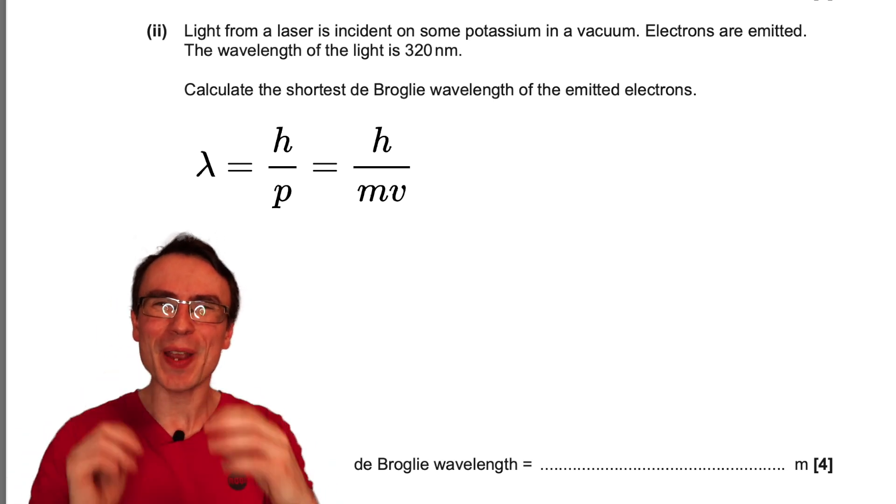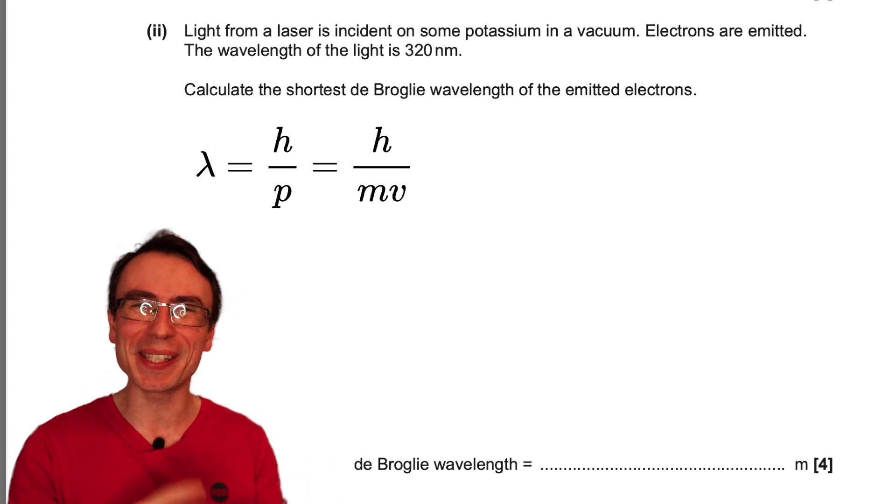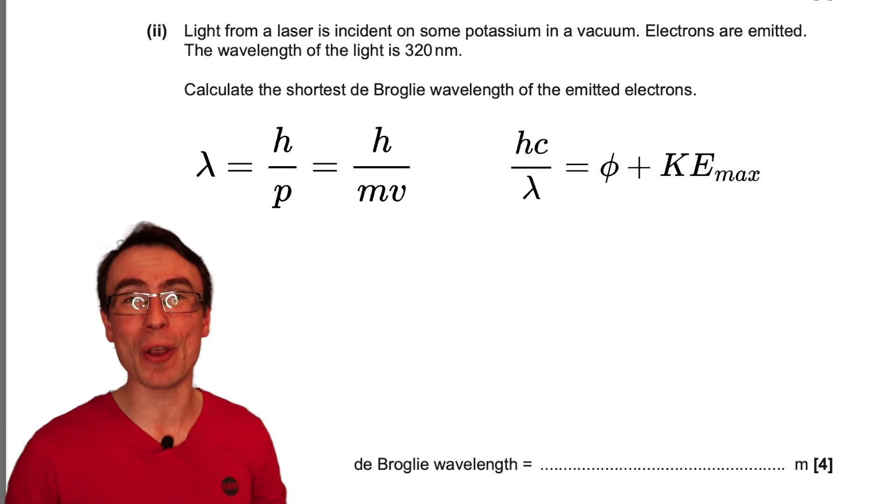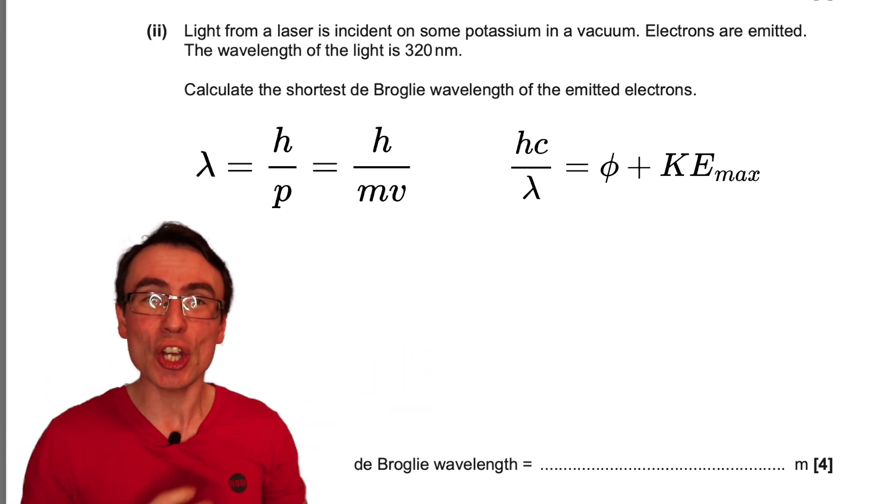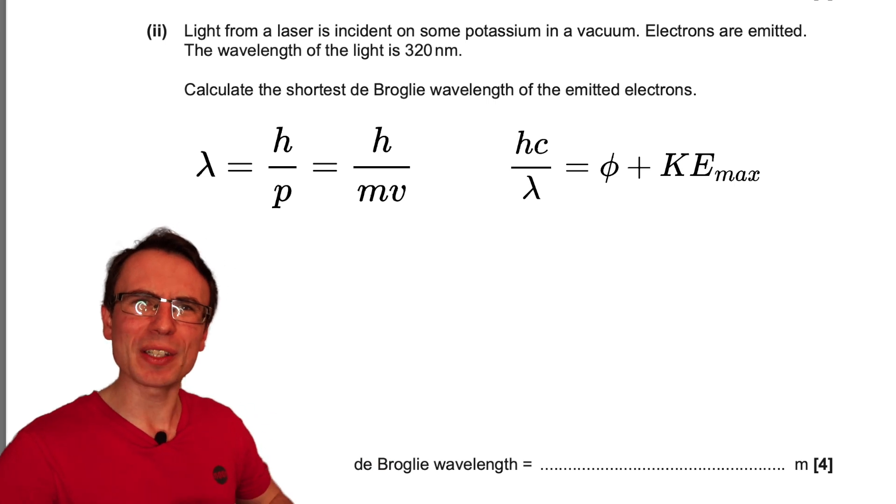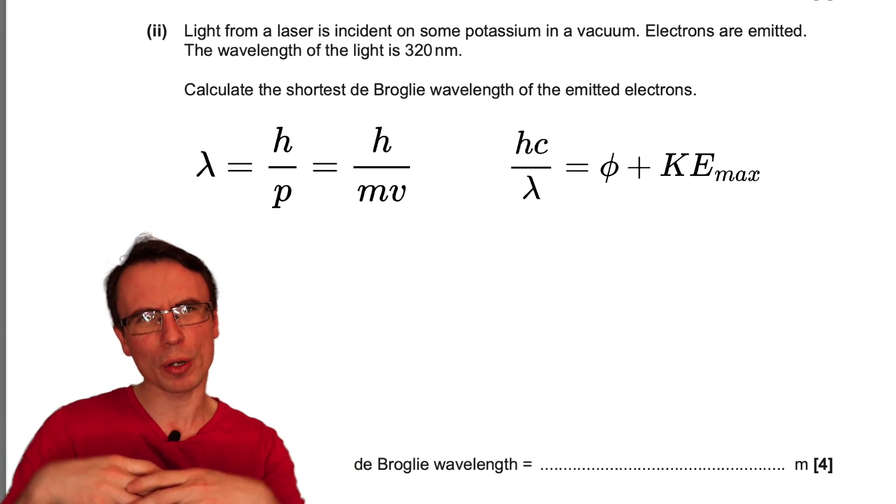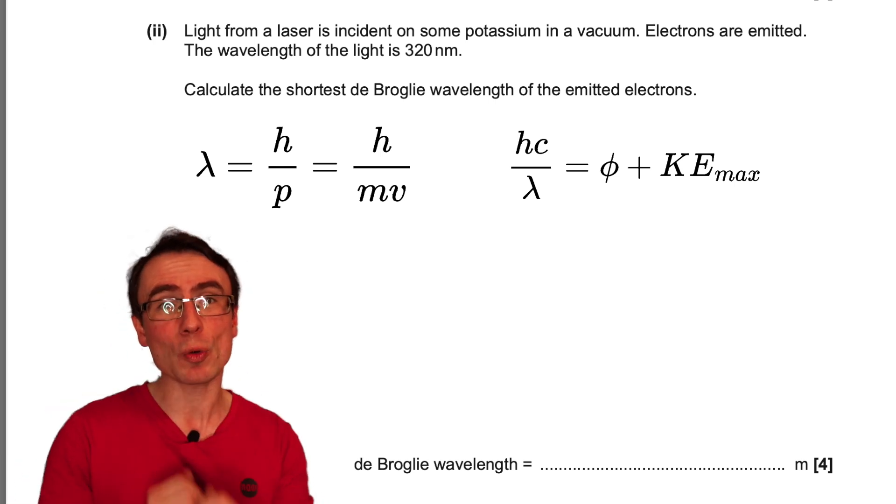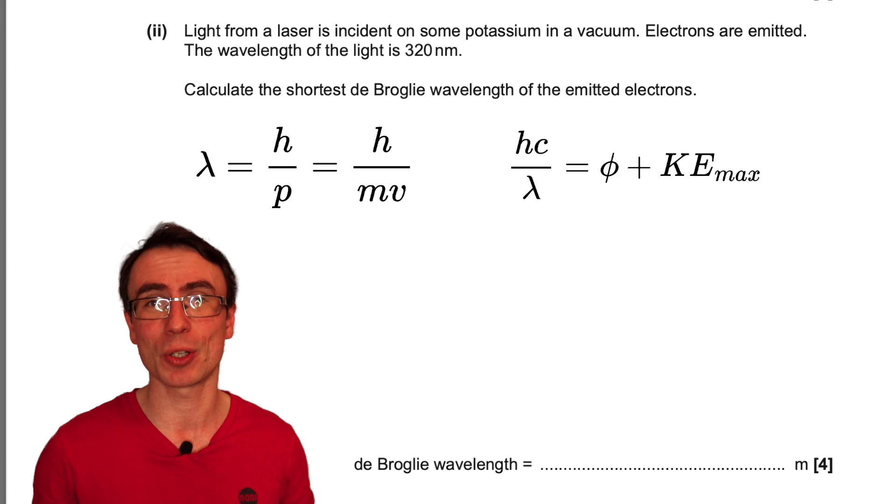The energy of the photon hc over lambda is shared. Some of that energy goes into releasing the electron from the surface of the metal and that's the work function term and some of it is transferred to its kinetic energy.